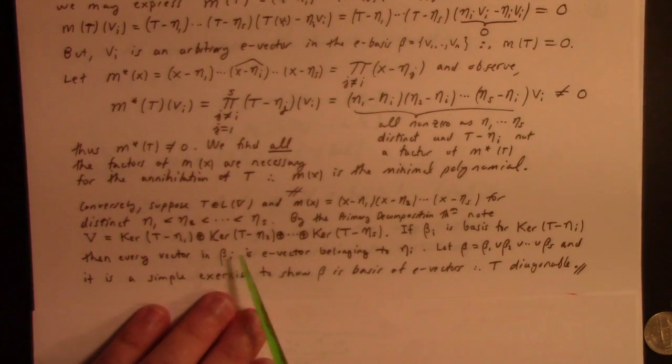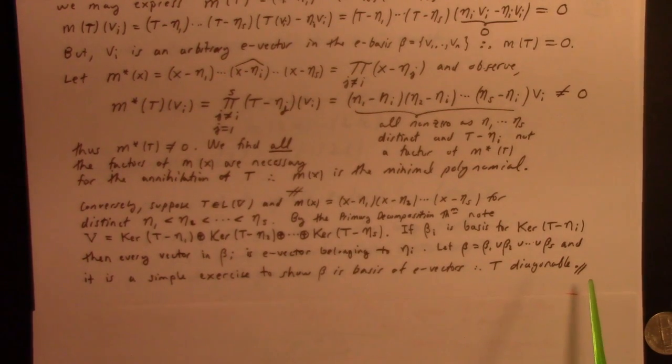But, by the way, if you have the direct sum decomposition, you form a basis for each thing in the direct sum. You can string the basis together, like this. That gives you a basis for the whole space, and you can easily verify that, in fact, that basis is an eigenbasis, because the things in beta 1 are eta 1. They belong to the root eta 1. The things in this kernel are characteristic vectors belonging to characteristic value eta 2, and so forth. Therefore, t is diagonal.